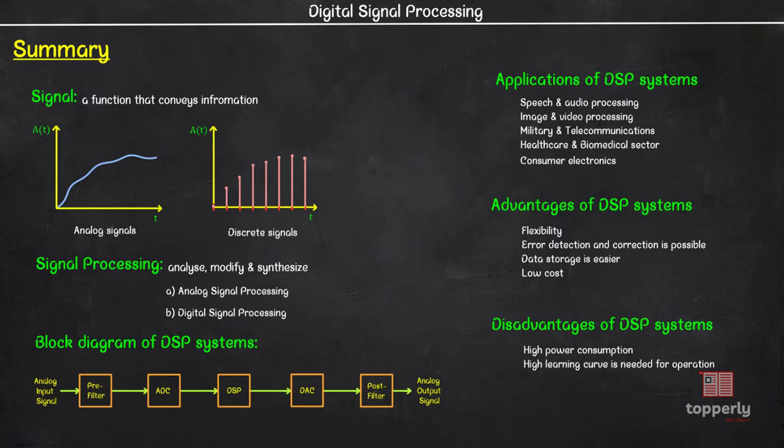Now let's summarize what all we learned in this lecture. First, we defined a signal and we learned that signals are primarily classified into analog signals and discrete signals. Then we learned about signal processing which is analyzing, modifying and synthesizing of signals. Then we saw the block diagram of DSP systems followed by the applications, advantages and disadvantages of DSP systems.